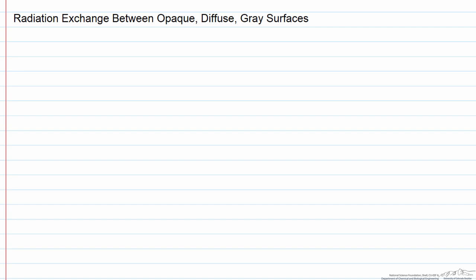Most surfaces cannot be considered black bodies. Radiation can leave due to reflection, emission, and experience absorption.